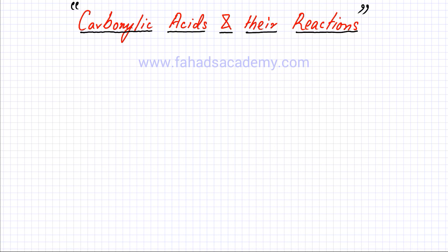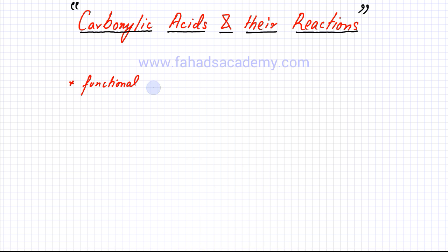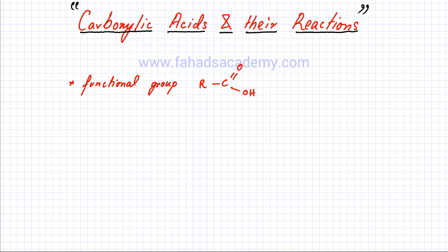The first thing we will do is revise what carboxylic acids are. Carboxylic acids have the following functional group: C double bond O, with an OH attached, and R representing the rest of the carbon chain. This is the functional group present in all carboxylic acids.